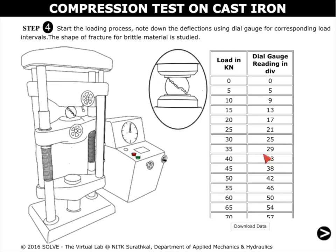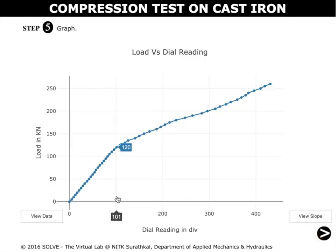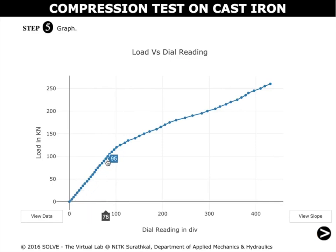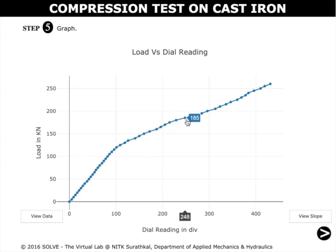We can download the observations by clicking on the download data button. This is a graph that depicts load versus dial reading. When we move the pointer along the slope of the graph, we can see the values here.